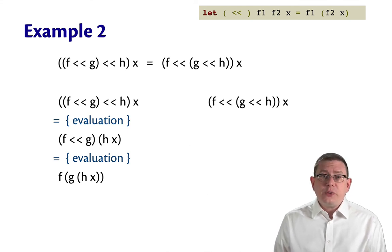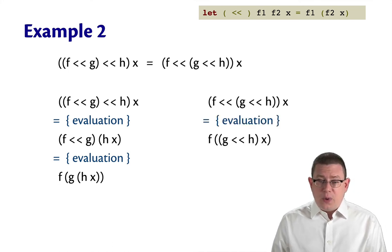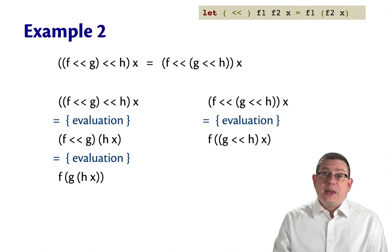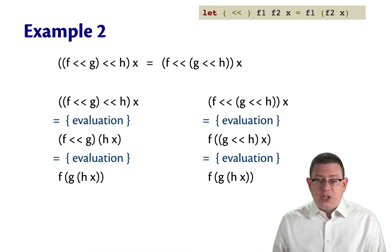So here's where I switch over to the other column and try to make progress there. By evaluation, I know that the result of that expression is going to be g compose h applied to x. Because g compose h is playing the role of f2 in that definition of composition. I can take another step of computation here. That ends up with f applied to g h x. And now I have both columns ending at the same place. Those two expressions are the same.